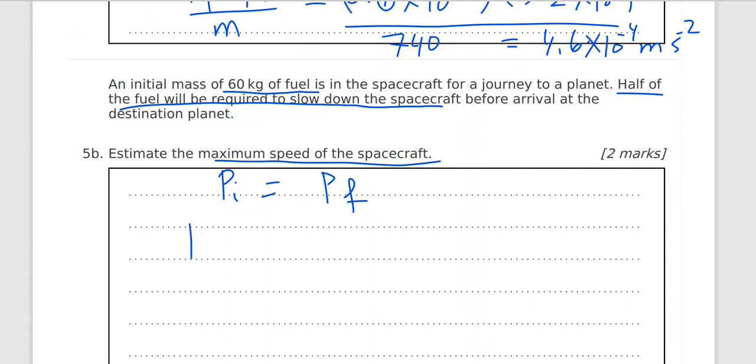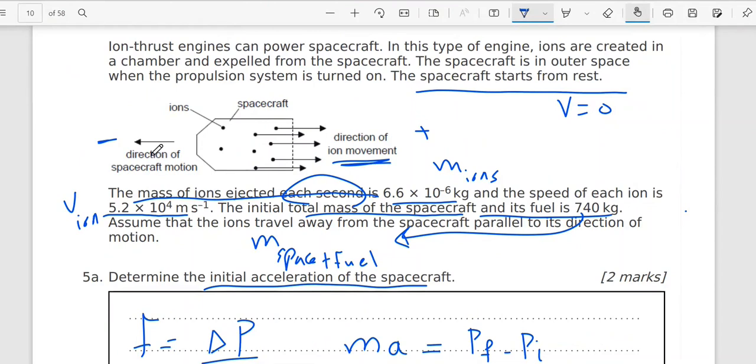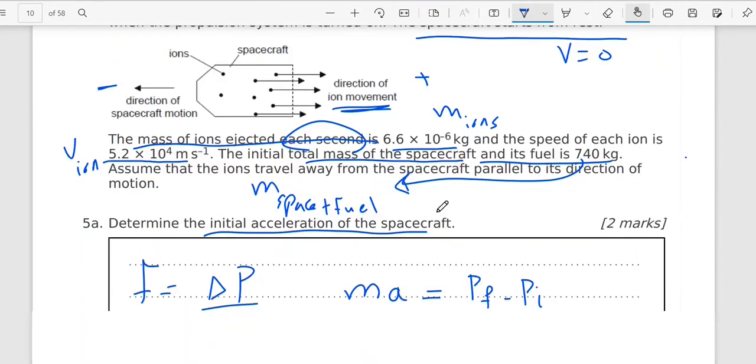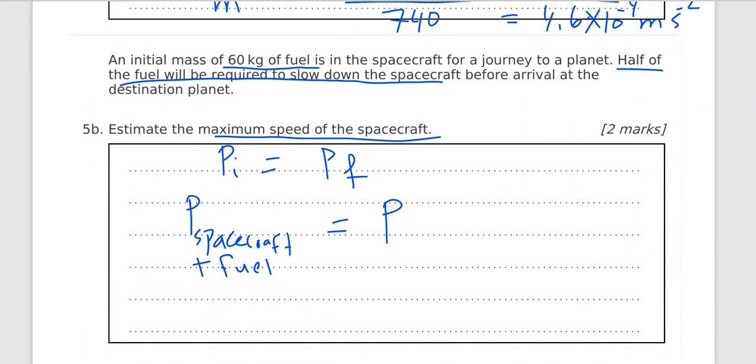Initially spacecraft with the fuel were together. So here we're going to find the momentum for both spacecraft plus the fuel. Now final momentum, both of them they will move in different directions. So spacecraft will move to the left, the fuel will move to the right. So I have momentum for the spacecraft plus momentum for the fuel. Initially both of them spacecraft with the fuel, they have no velocity. They were at rest. So remember momentum is mass times velocity.